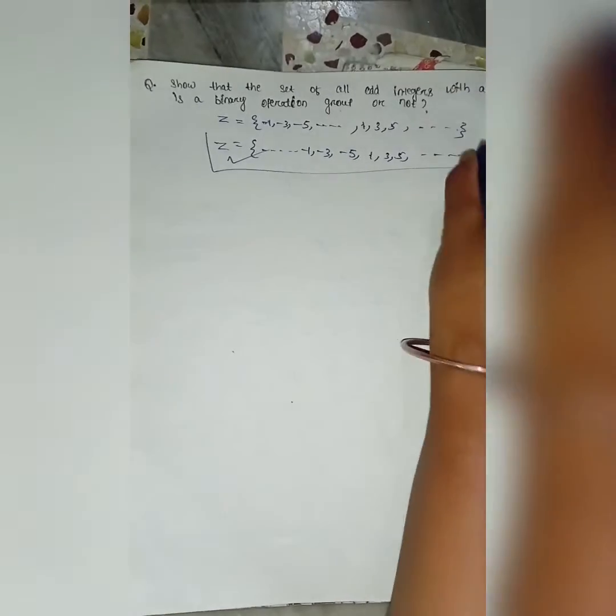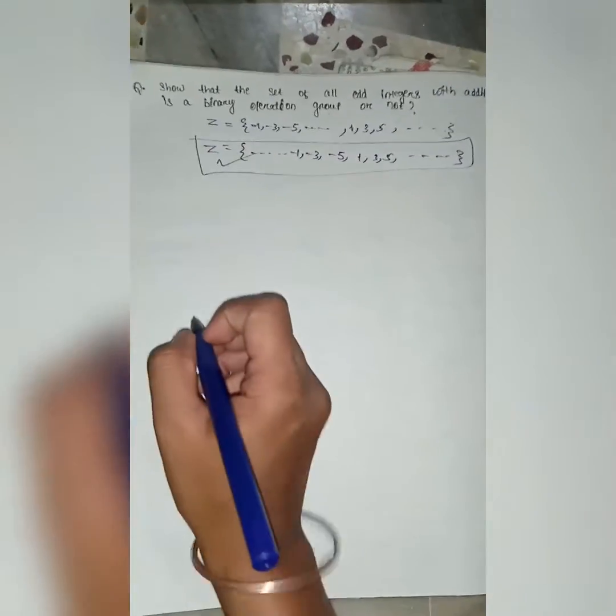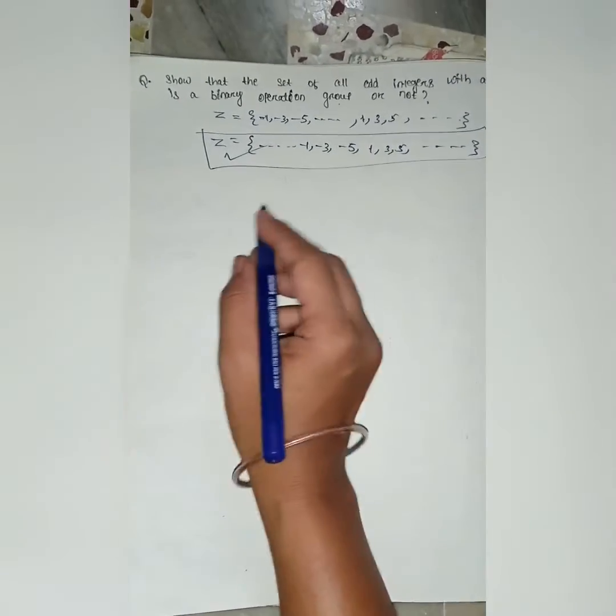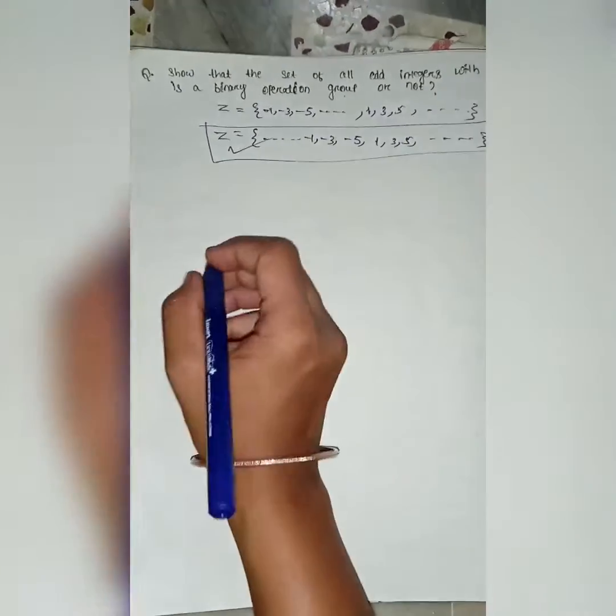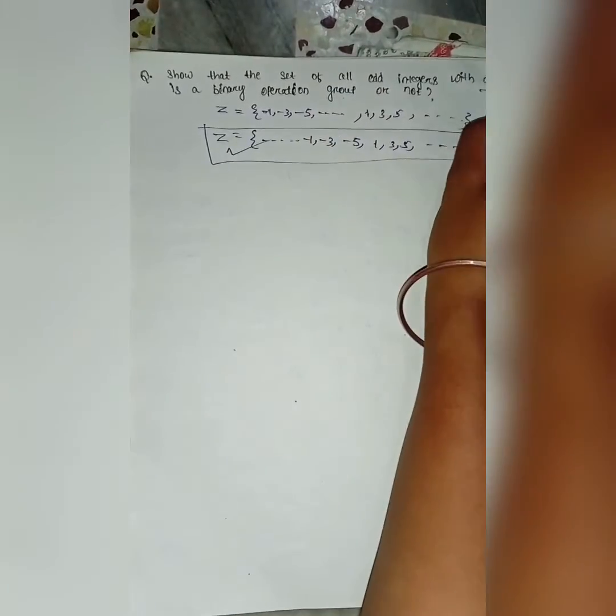So, it is the set of z. That is, all odd integers. Here binary operation is what? Addition.